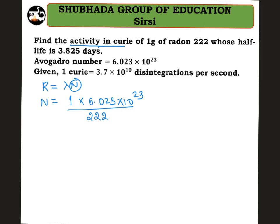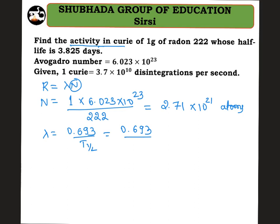So N comes out to be 2.71×10²¹ atoms present in one gram of the sample. Now we calculate lambda. Lambda is equal to 0.693 divided by t-half. Substitute: lambda equals 0.693 divided by t-half.